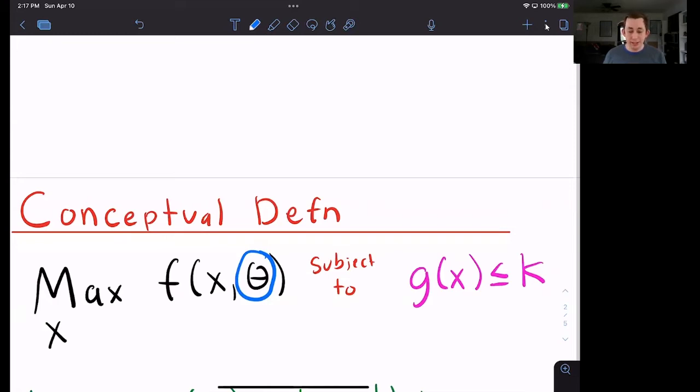We have some constraint. That constraint is going to be that some other function g of x has to be less than or equal to k. So you can think about it again in the terms of a utility maximization problem. That might be your budget constraint.